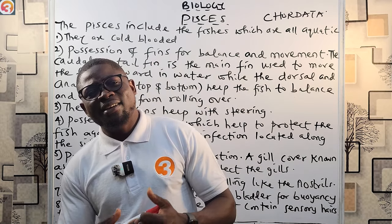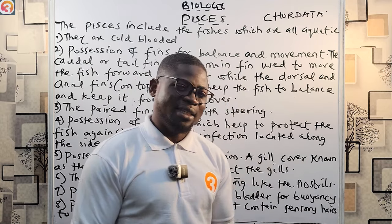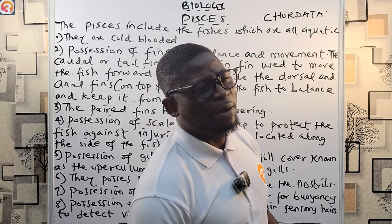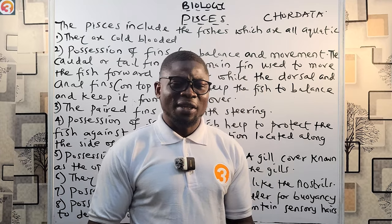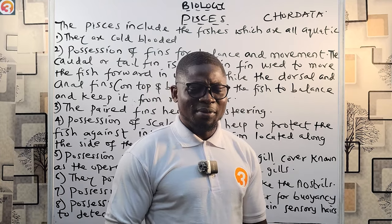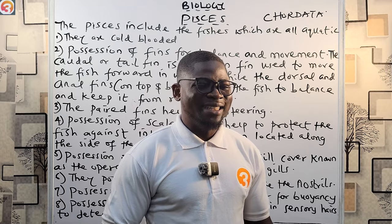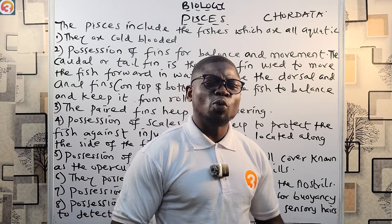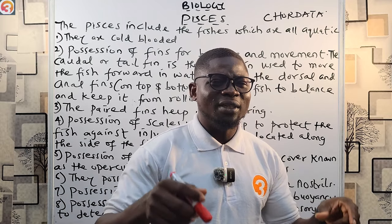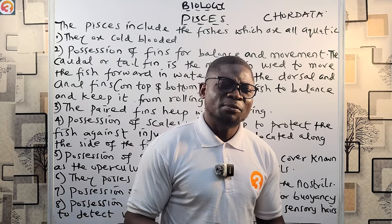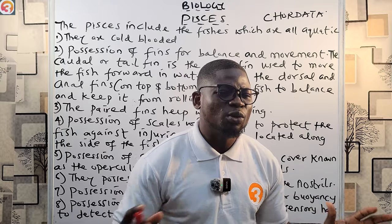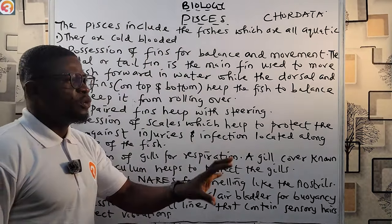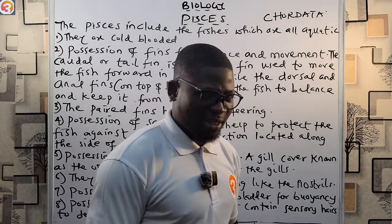Fishes are all aquatic — they are not terrestrial. They do not stay on land. Whenever you buy a catfish and put it in a small bowl and it jumps out, you will see it struggling. It does not want to stay on the ground because that is not its natural habitat.